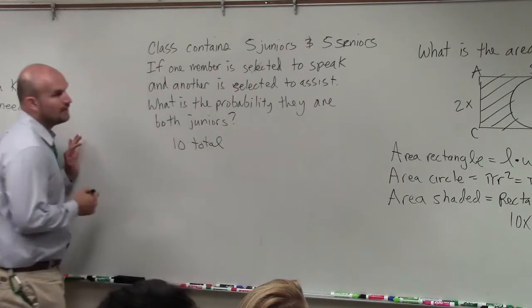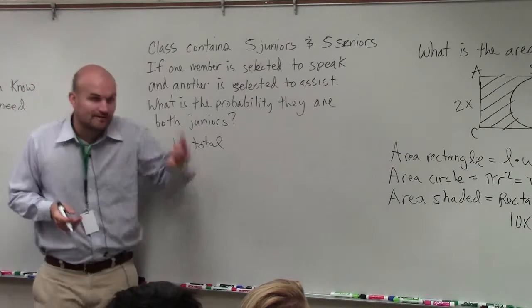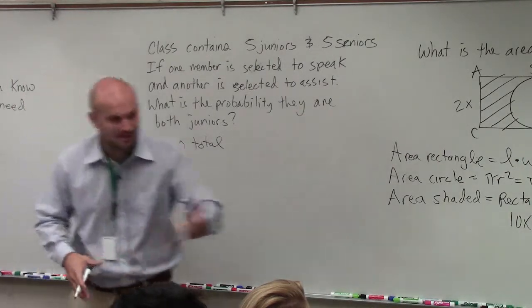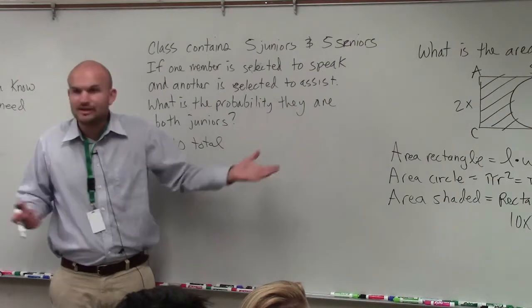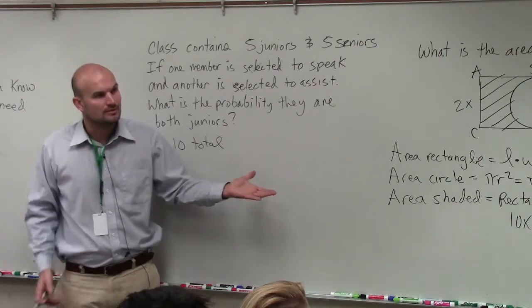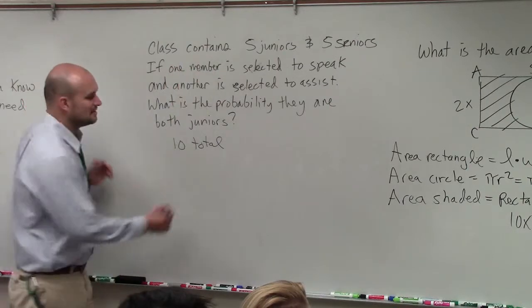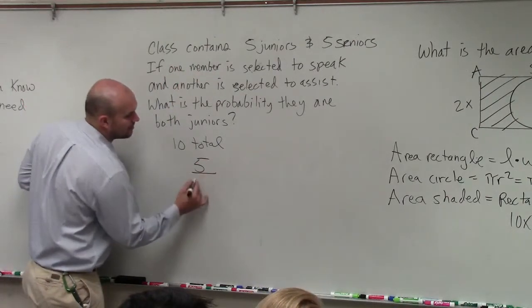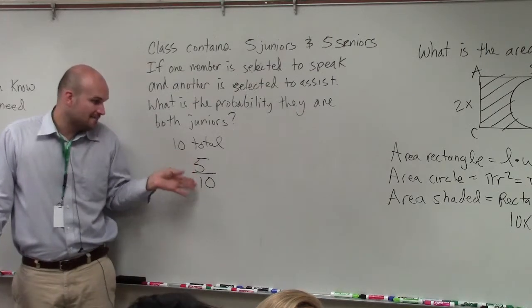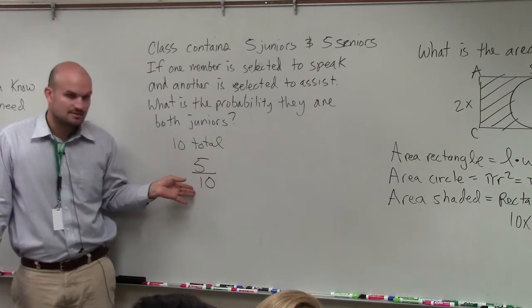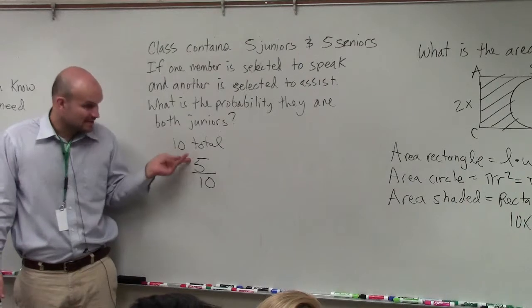10 total, right? But we want to say, if we're going to select somebody, that means I'm going to select somebody at random like I did with you. What is the possibility that you have to be a junior? Well, how many juniors do I have total? Five. So basically, my probability of selecting one junior, there's only five out of a total of 10 students. So I can only select five out of 10.